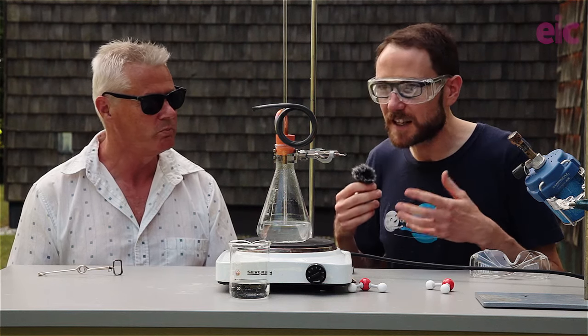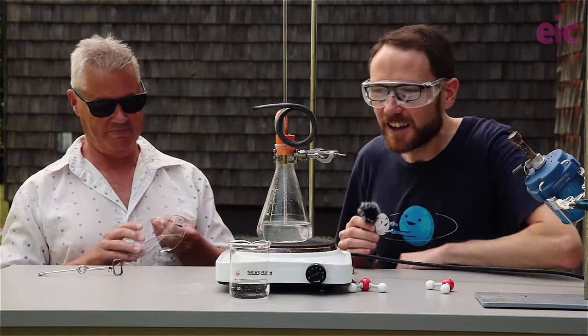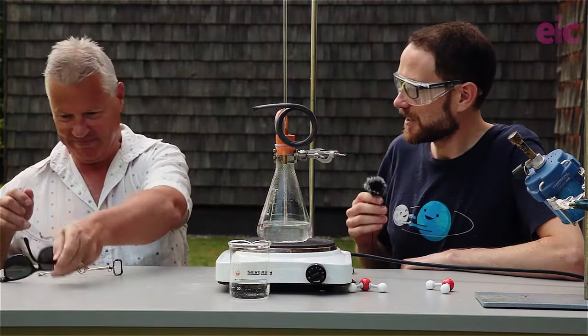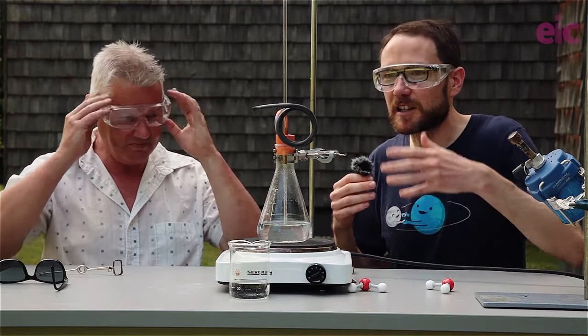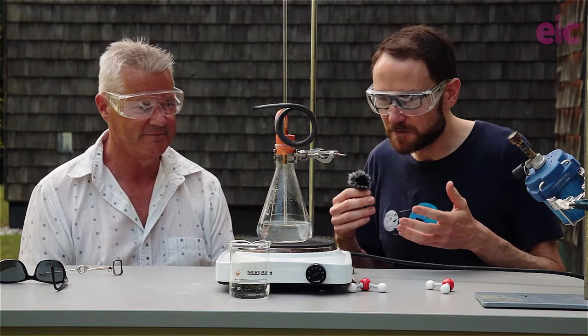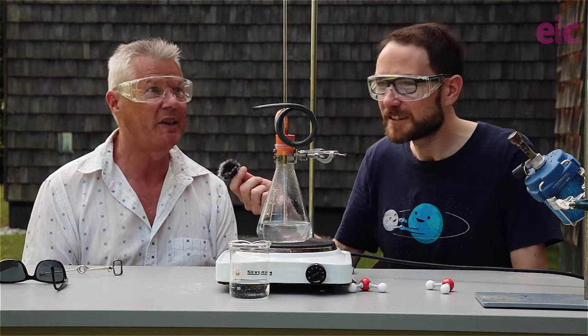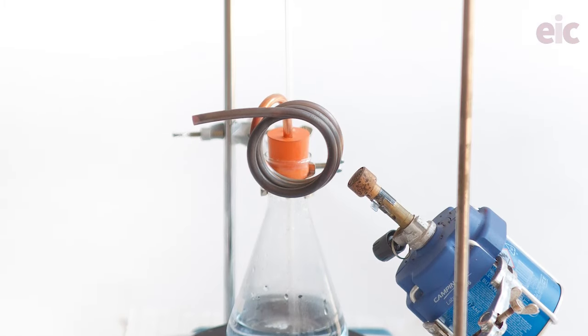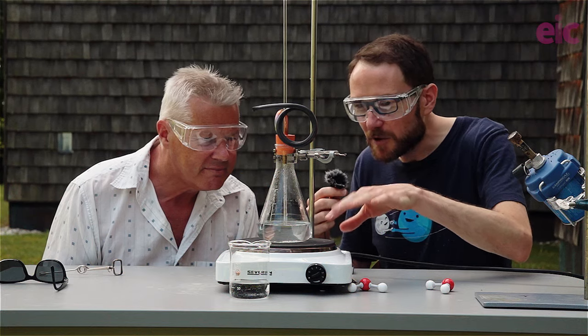So before we get into things, we'd better pop on some eye protection. Looking good, buddy. Okay, and we want to first of all just have a little talk about what we have up in front of us. Malcolm, do you want to just briefly describe what you can kind of see around you and what's going on? So there's a beaker on a hot plate, and a copper tube coming out of the beaker, and a big glass tube going up much higher, and there's some white stuff in the beaker.